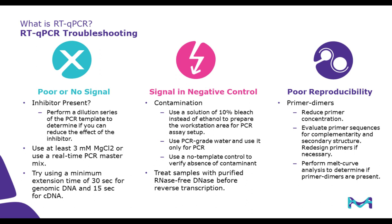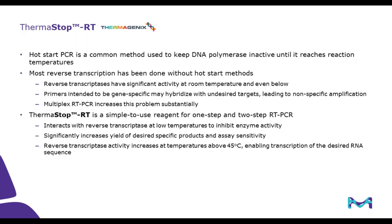Poor reproducibility is another common issue for RT-qPCR. Primer dimers can be avoided by reducing primer concentration, evaluating primer sequences for complementarity and secondary structure, and redesigning the primers if necessary. Finally, a melt curve analysis can help determine if primer dimers are present.